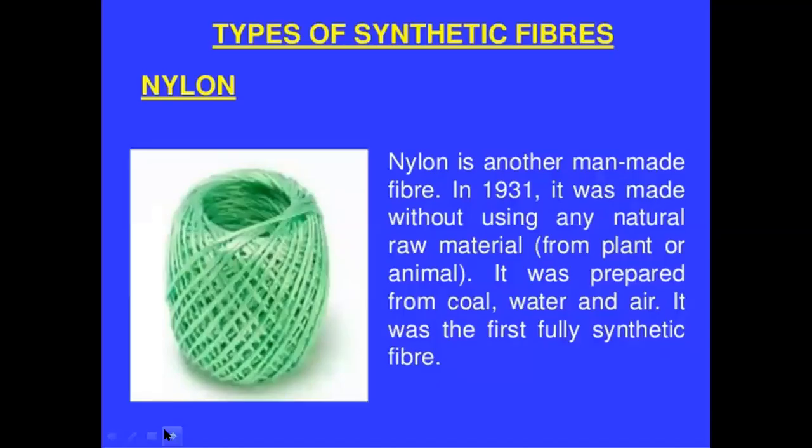Next is nylon. Nylon is another type of man-made fiber. In 1931, it was made without using any natural raw material — no plants or animals were used. It was prepared from coal, water, and air. It is totally artificial and totally synthetic — it was the first fully synthetic fiber.